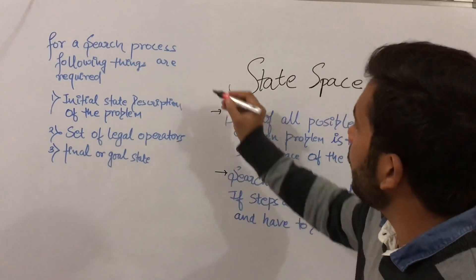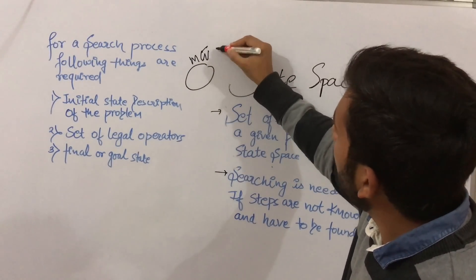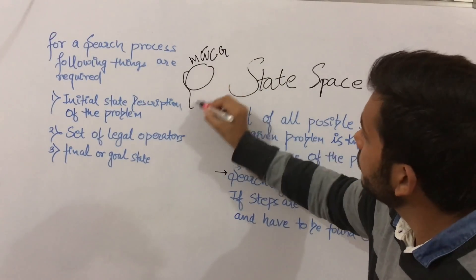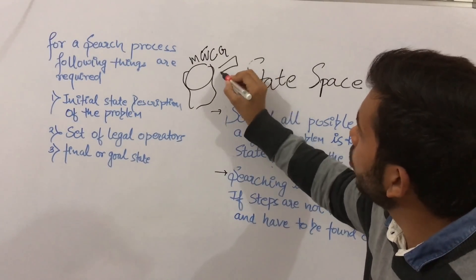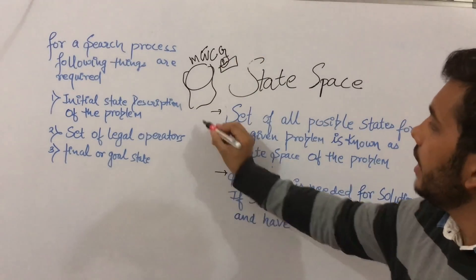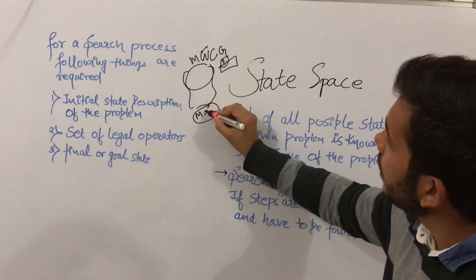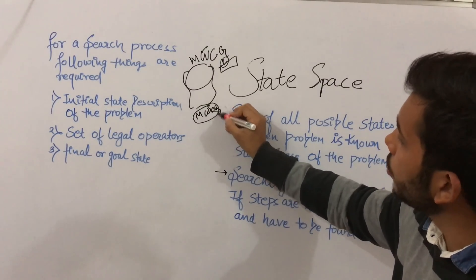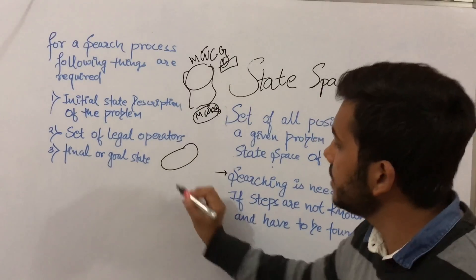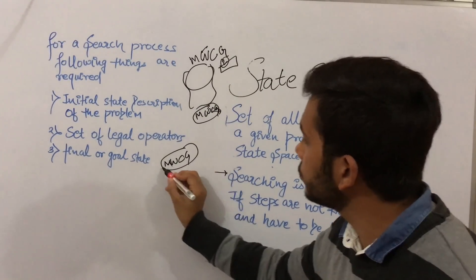Suppose there is a problem where there was a man, wolf, a cabbage, and a goat, and there was a river with a single boat. A man can take only two items at a time and he wants to get across with all of them — man, wolf, cabbage, and goat. So the initial condition was: man was there, wolf was there, cabbage was there, and goat was there.